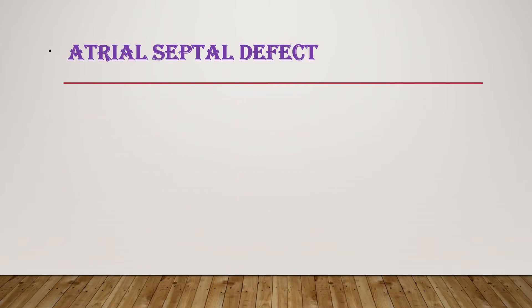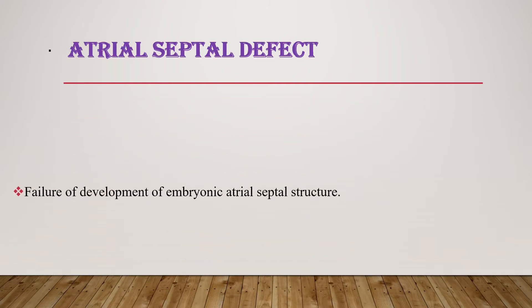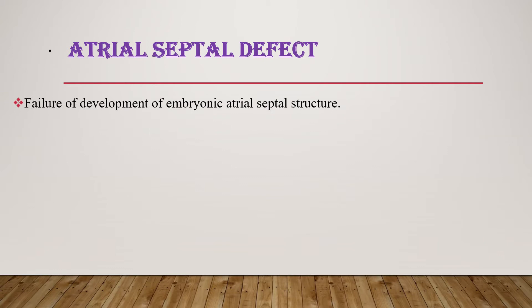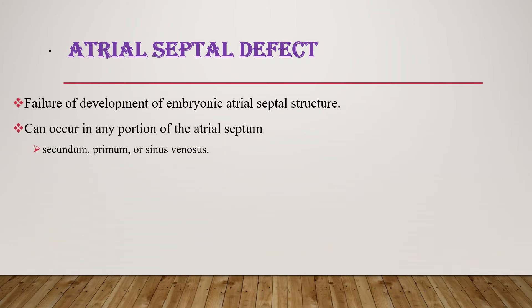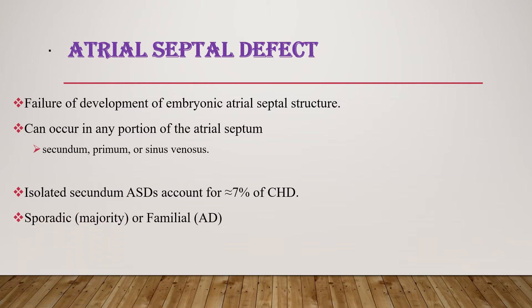Starting from shunt lesions, the first one is atrial septal defect. Atrial septal defect is due to failure of development of embryonic atrial septal structure, and it can occur in any portion of the atrial septum, including secundum, primum, and the sinus venosus. Isolated secundum ASD accounts for seven percent of congenital heart disease, so isolated secundum ASD is the most common type of atrial septal defect.